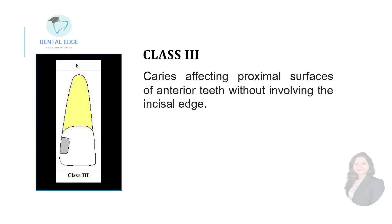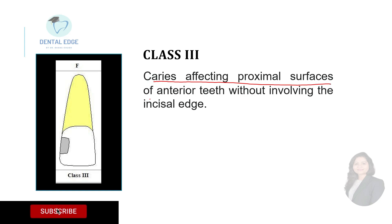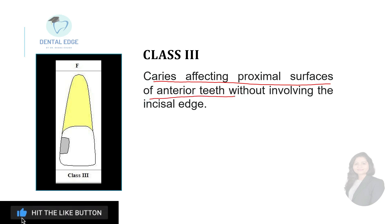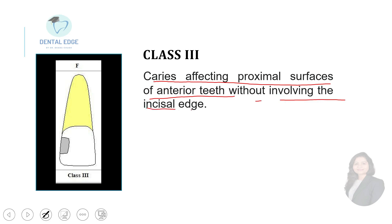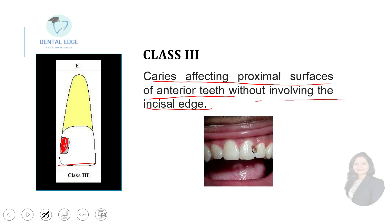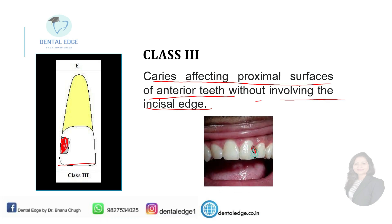Class three is caries affecting the proximal surfaces of anterior teeth — that is either the mesial or distal surface — without involving the incisal edge. For example, a caries on the proximal surface of an anterior tooth without involving the incisal edge.